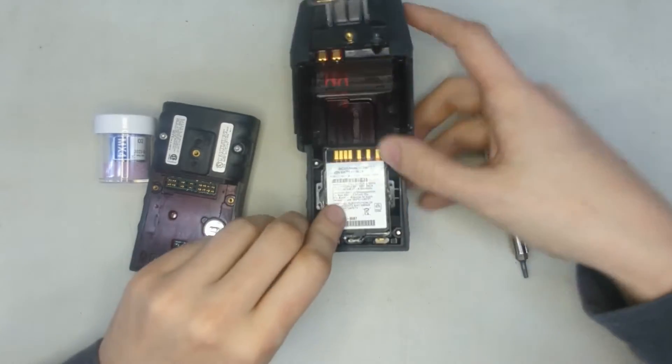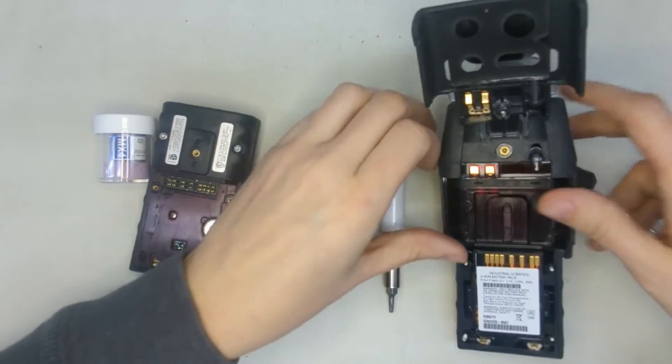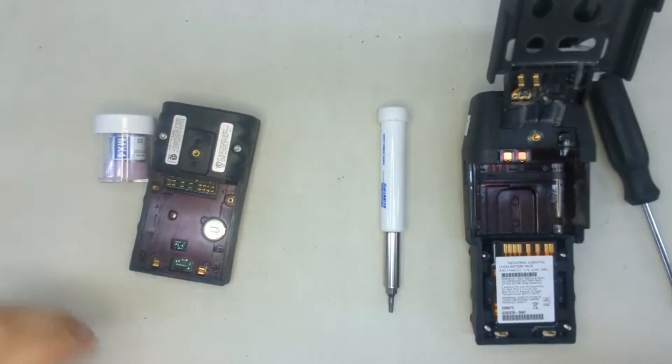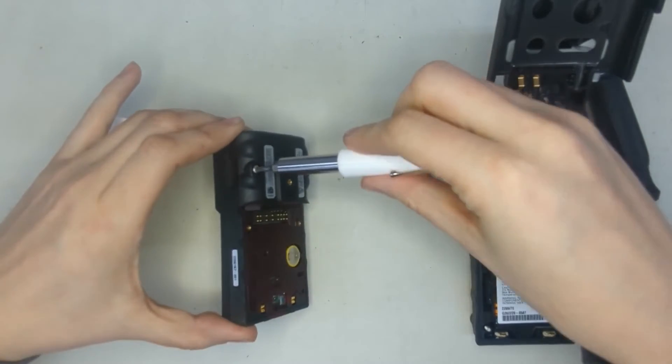Okay, this is your battery here. We're going to put that to the side. Just like that. And here's the unit here. Now we've got two more screws right up here.